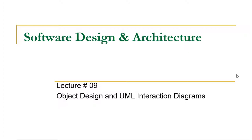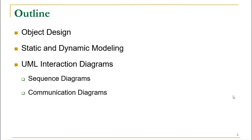Hello everyone and welcome to this new lecture on software design and architecture. By now we have been performing requirement analysis, doing use case diagrams, looking at the domain model, system sequence diagrams, and writing operation contracts, then looking at how we can architecturally organize all that. Now we are going to proceed towards dynamicity — identifying and designing our objects, and talking about interaction diagrams. In this lecture we will cover object design, static and dynamic modeling, and interaction diagrams, mainly sequence and communication diagrams.